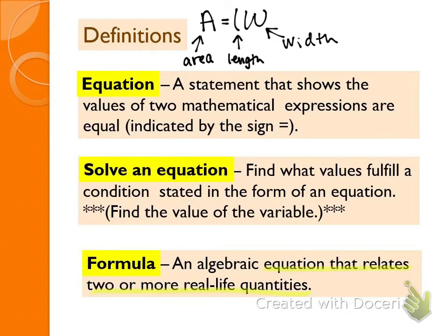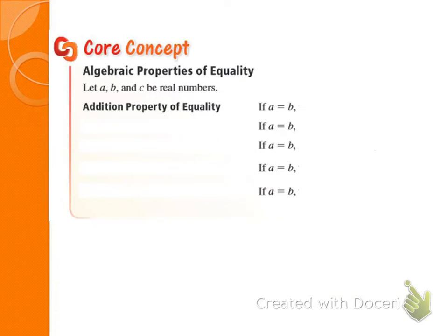An equation could have a real-life quantity you're solving for, but you're not plugging anything in. Now the second section: the properties of equality. These properties keep equations equal — the idea being what you do to one side, you have to do to the other. The first one is the addition property of equality: if A equals B, then you can add C to both sides and the equation remains equal.